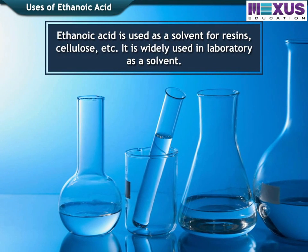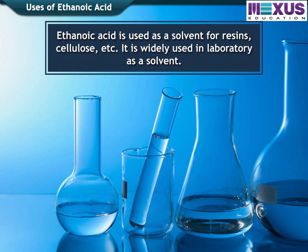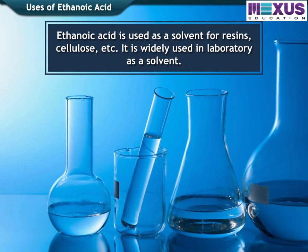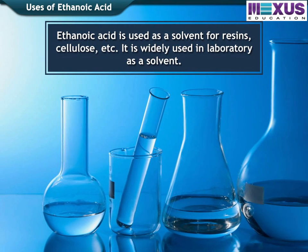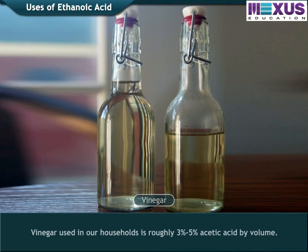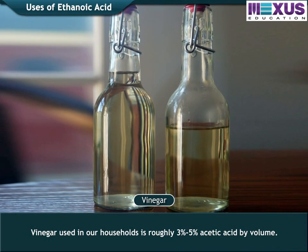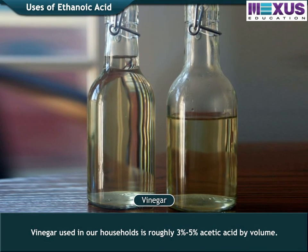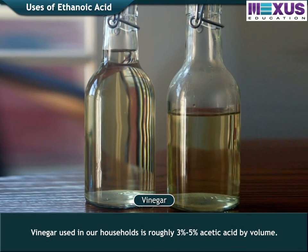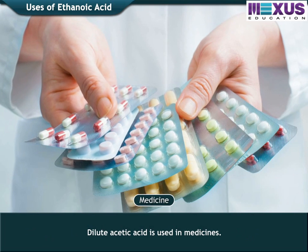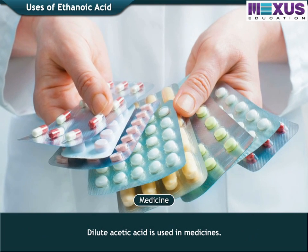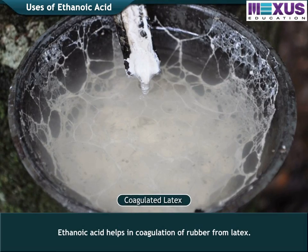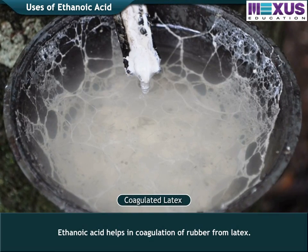Ethanoic acid is used as a solvent for resins, cellulose, and other materials, and is widely used in laboratories as a solvent. Vinegar used in households is roughly 3% to 5% acetic acid by volume. Dilute acetic acid is used in medicines, and ethanoic acid also helps in the coagulation of rubber from latex.